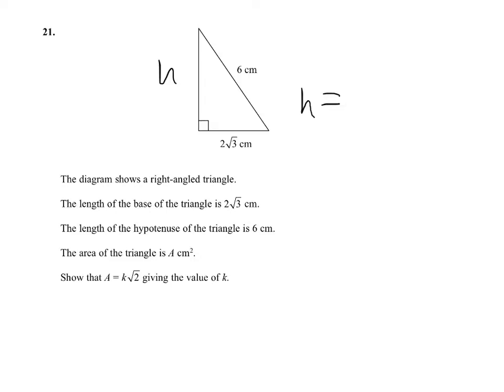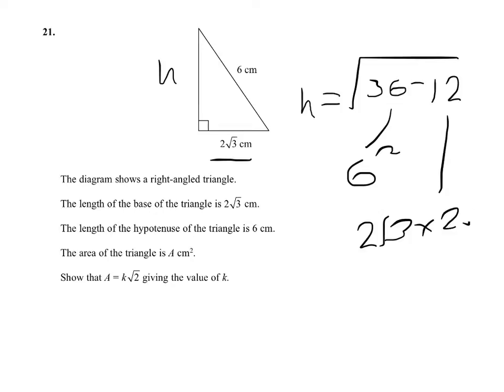The height is going to equal the square root of our hypotenuse squared, which is 6 squared, which is 36, and subtract our base squared. The base squared will be 2 squared times root 3 squared, which will give me 4 times 3, which is 12. I'll show you 6 squared and 2 root 3 times 2 root 3 equals 4 times 3. So h equals the square root of 24.